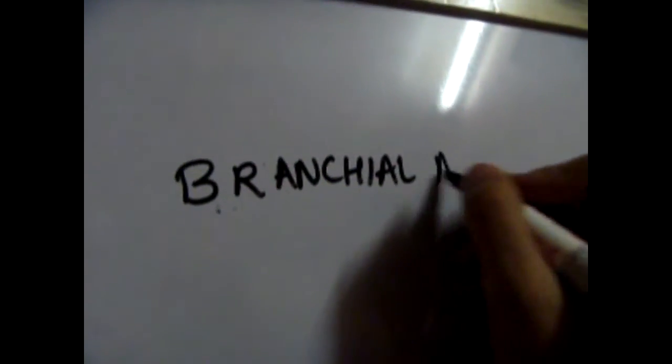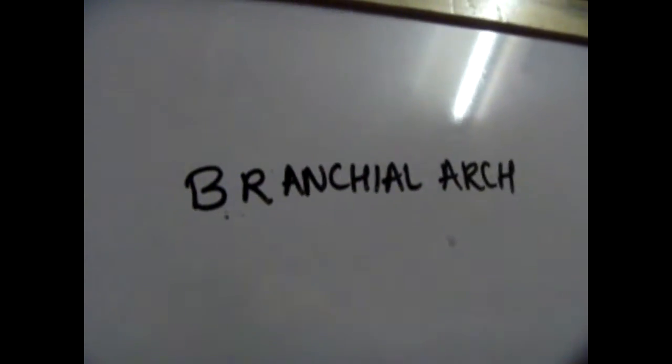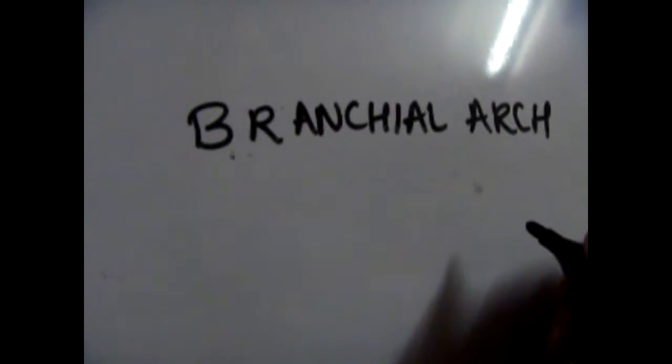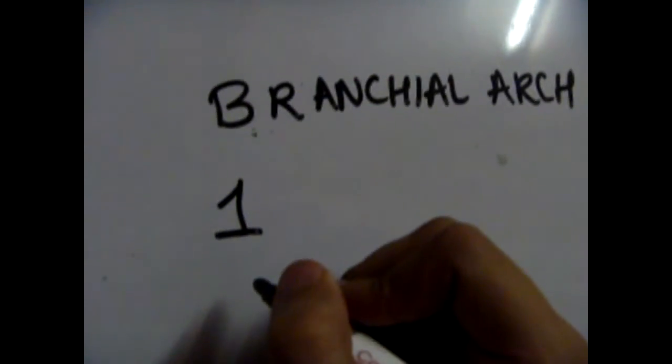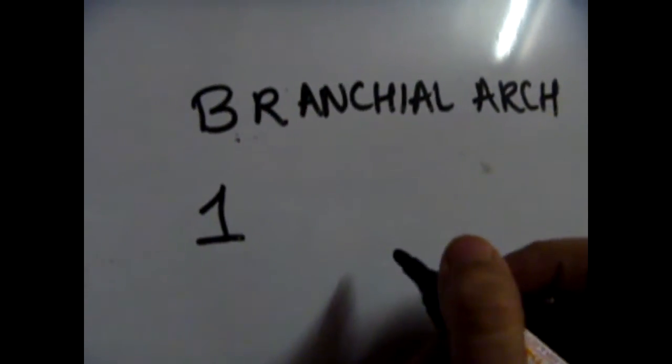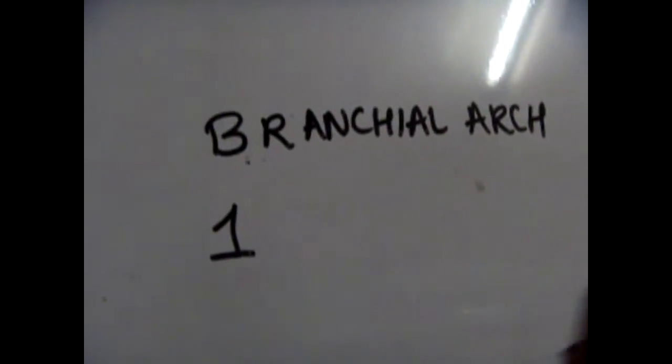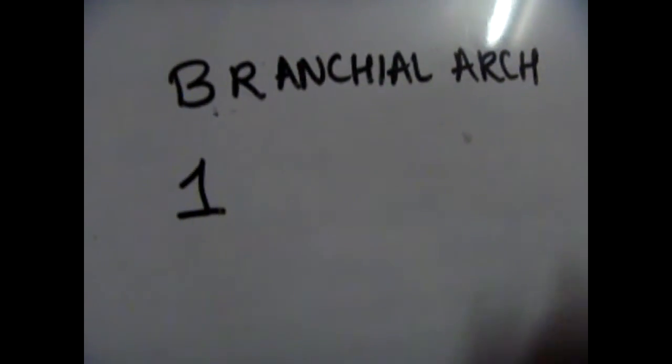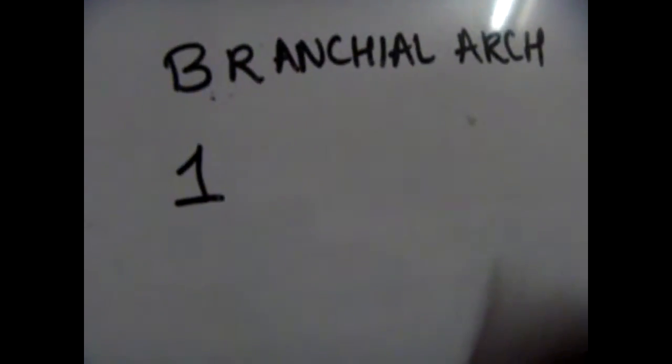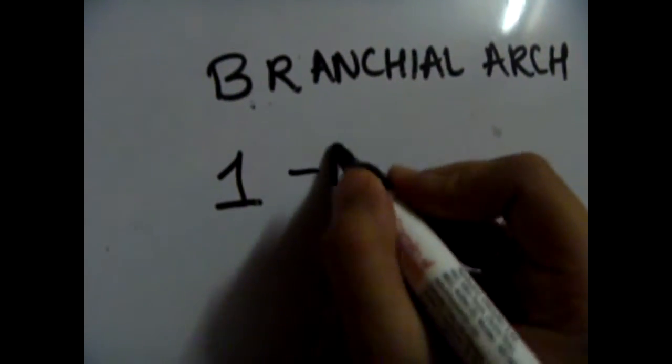We're going to learn about branchial arch derivatives today and I'm going to couple it with mnemonics so that you don't forget it. The first branchial arch gives rise to muscles of mastication, masseter, medial pterygoids, mandible, malleus, Meckel's cartilage, and mandibular ligament—everything from M basically.